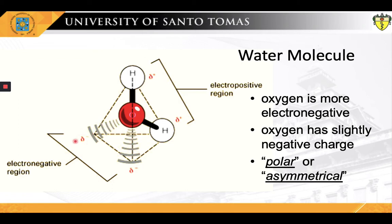Water molecules form hydrogen bonds with each other and are strongly polar. This polarity allows water to dissociate ions in salts and bond to other polar substances such as alcohols and acids, thus dissolving them. Its hydrogen bonding causes its many unique properties, such as having a solid form less dense than its liquid form, a relatively high boiling point of 100 degrees Celsius for its molar mass, and high heat capacity.